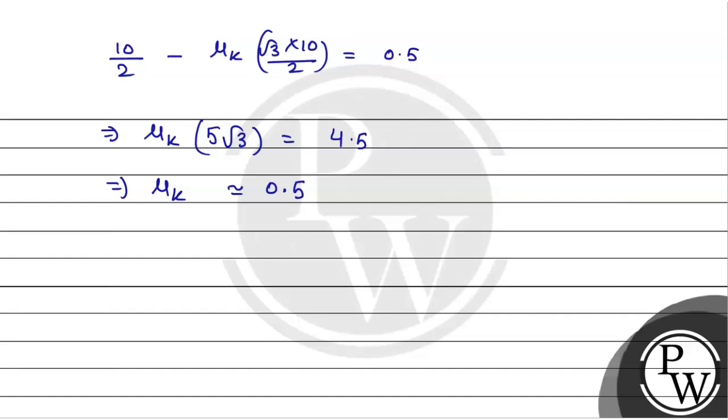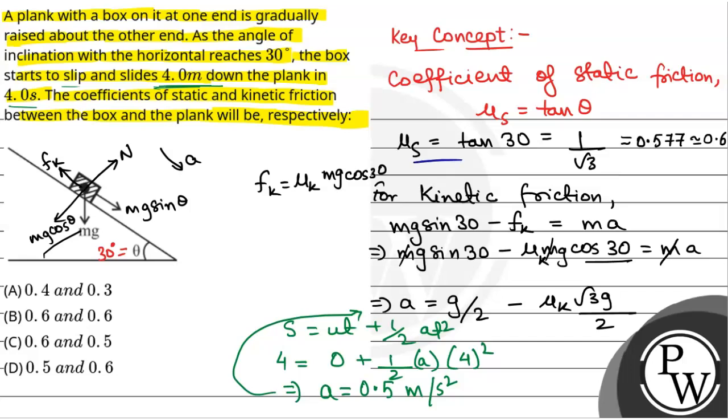So mu_k will be equal to 0.5 and kinetic friction coefficient will be 0.6. The correct option will be 0.6 and 0.5. So this will be the final answer. Hope you all understood it well. Best of luck.